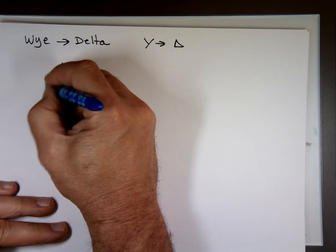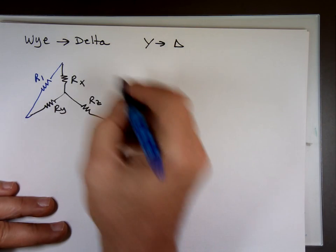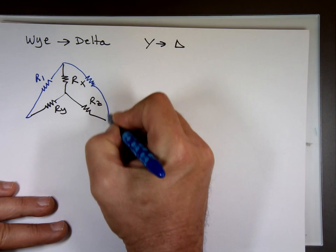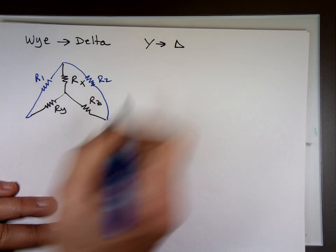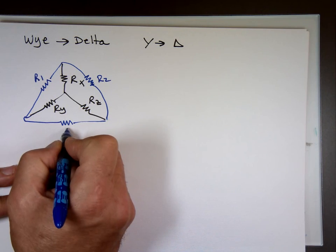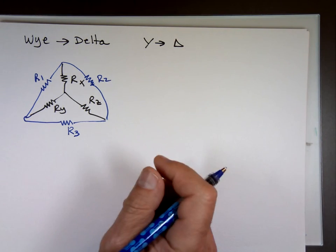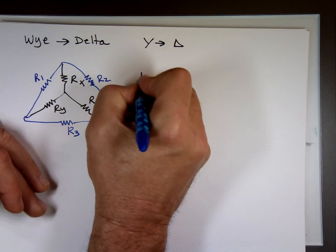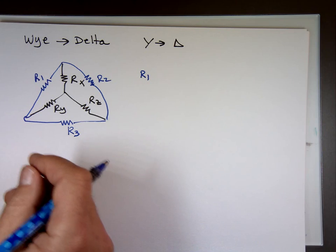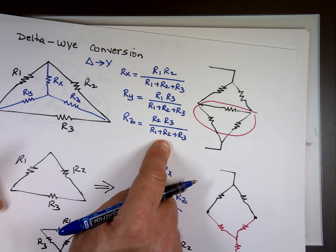I should be able to replace that with a delta. I'm going to call this R sub 1. This is R sub 2. This is R sub 3. Now to find what R sub 1. Remember the previous one, the bottom was always the same. See this? The bottom was always the same.